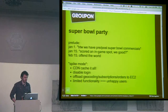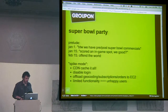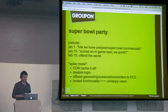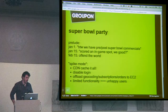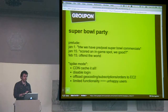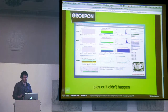Then Super Bowl — that's when we offend a bunch of people. But luckily, we did our part and nothing happened. We had to make some drastic changes because we had such a short timeline. We implemented what we called spike mode. The idea was we CDN cache everything — the entire content distribution network. That means we had to disable login to the site, which makes people unhappy. We also offloaded geocoding, subscriptions, and orders to EC2.